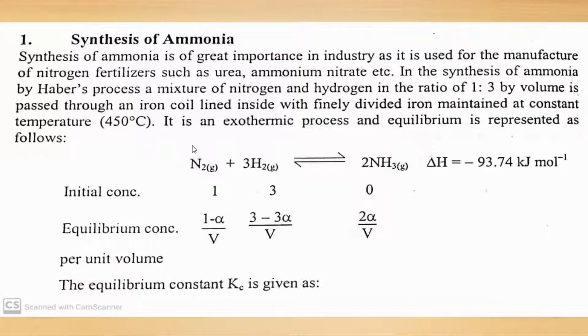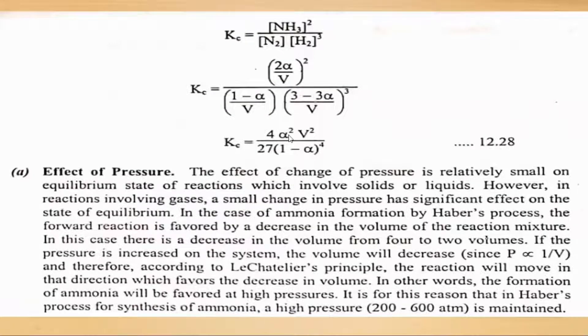At high temperature, this reaction reverses. Ammonia decomposes. Initial concentration: 1, 3, 0. Equilibrium concentration: (1-α)/V, (3-3α)/V, 2α/V. Finally, Kc equals 4α²V²√27/(1-α)⁴. This derivation is also important for the exam.